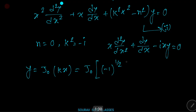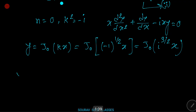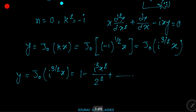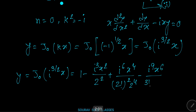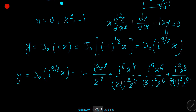The solution is y = J₀(kx) = J₀((-1)^(1/2) · x) = J₀(i^(3/2) · x). Therefore y = J₀(i^(3/2) · x) = 1 - i³x²/2² + i⁶x⁴/(2! · 2² · 2^6) + i¹²x⁸/(4! · 4² · 2^8) + ...